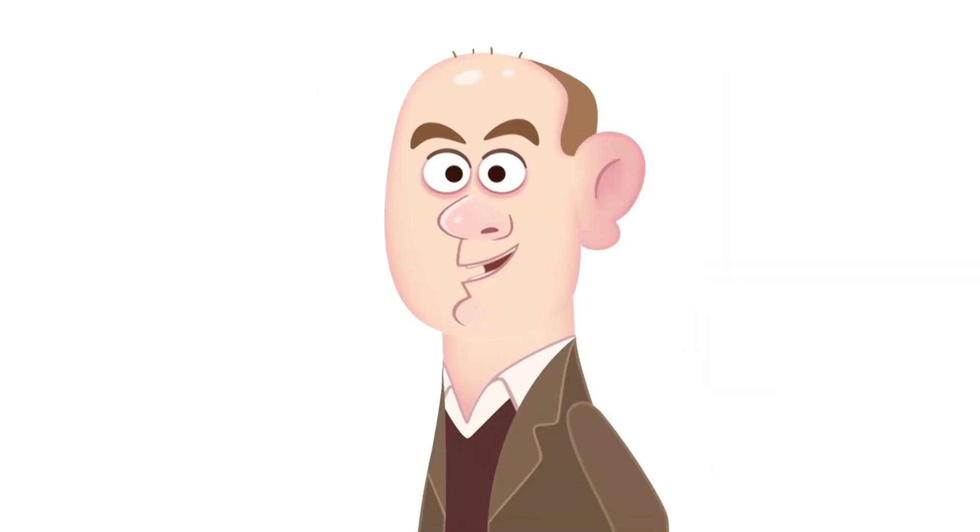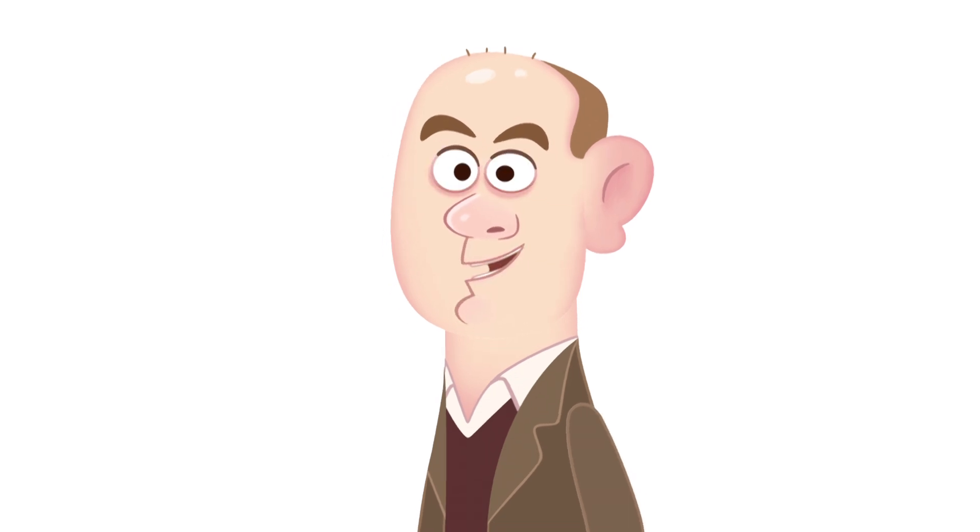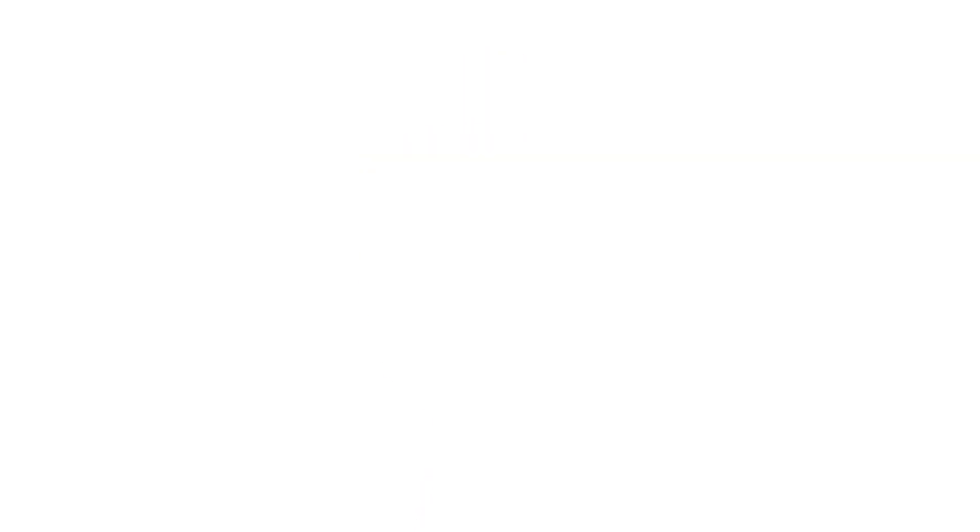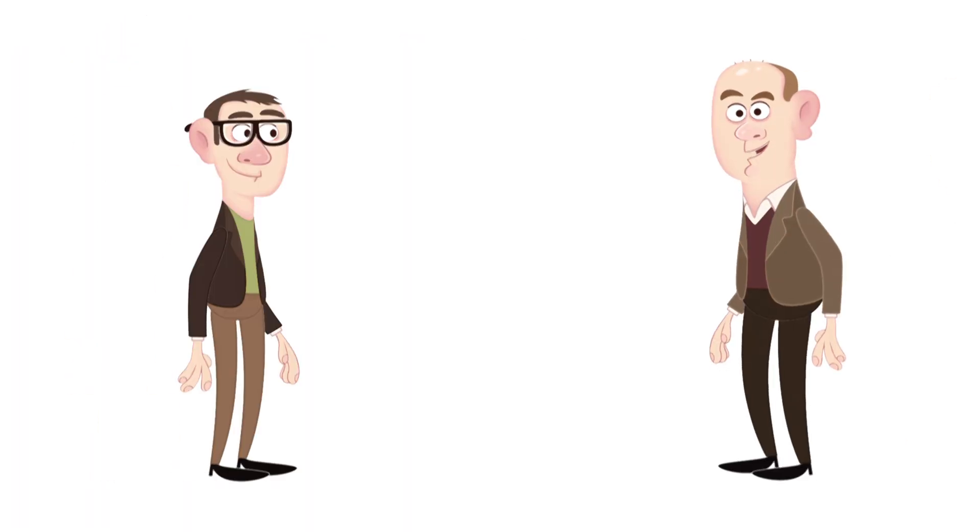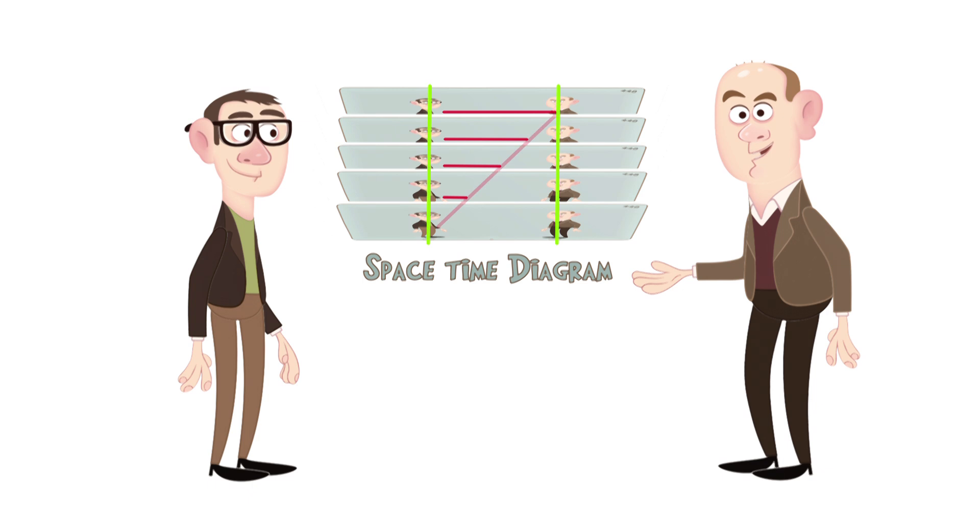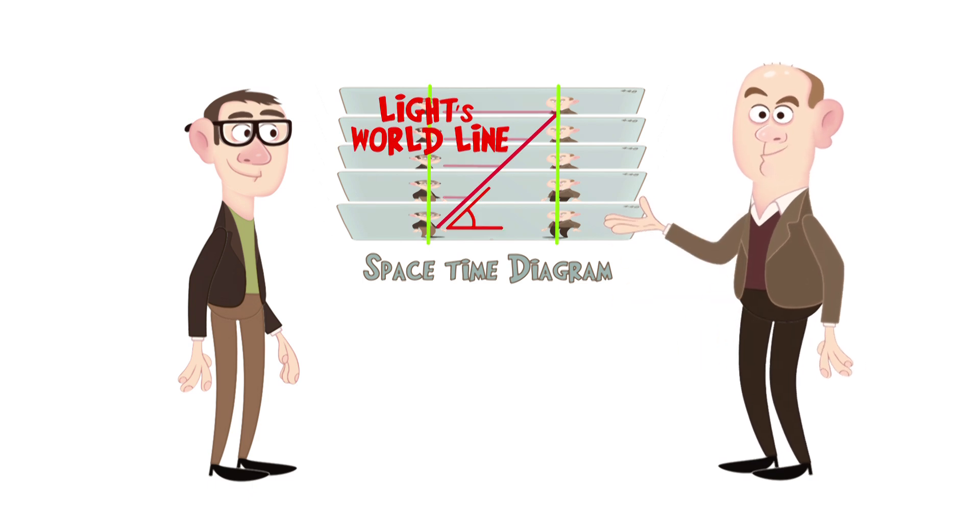In this lesson we'll add the single experimental fact that whenever anyone measures just how fast light moves, they get the same answer: 299,792,458 meters every second. This means when we draw light on our spacetime diagram, its world line always has to appear at the same angle.